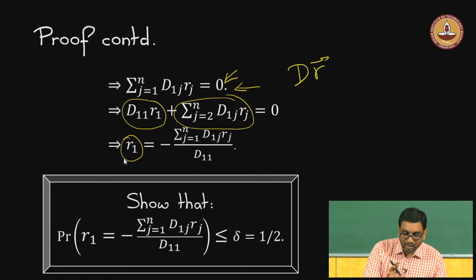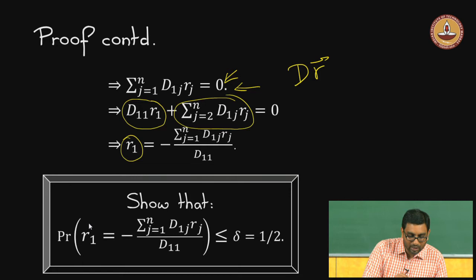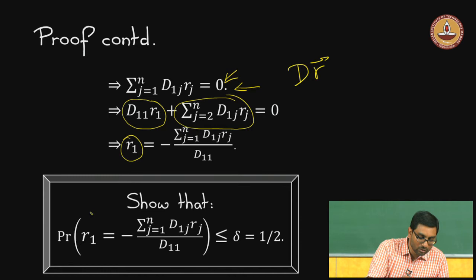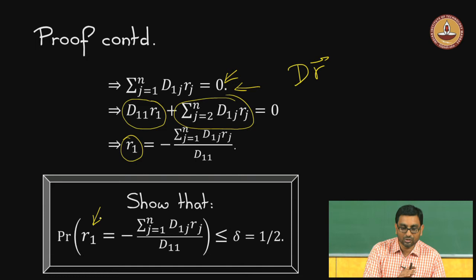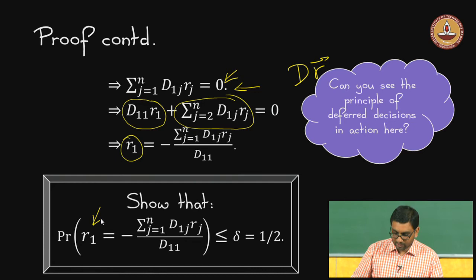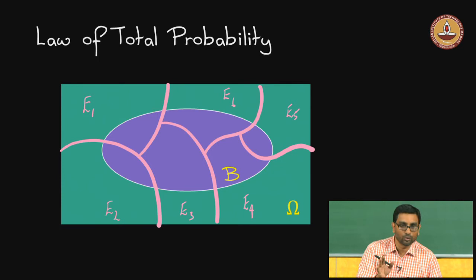Our statement can now be simplified: we need to show that the probability that the first bit r-one equals this particular right-hand side quantity is at most delta. We have isolated our focus on just r-one, and now we have the ability to apply the principle of deferred decision. We avoid worrying about the other random bits and focus our efforts on seeing what happens to r-one. To be careful and formal about it, what we are actually doing is applying the law of total probability, which we will discuss now.